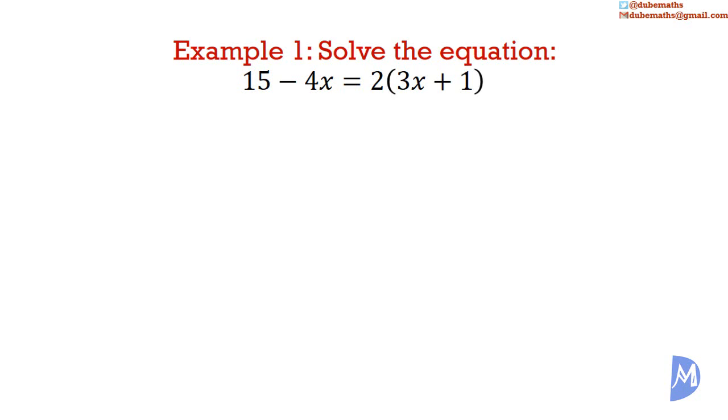So we simplify the equation by expanding the brackets to get 15 minus 4x is equal to 2 multiplied by 3x is equal to 6x, and 2 multiplied by positive 1 is equal to positive 2. 6x plus 2.